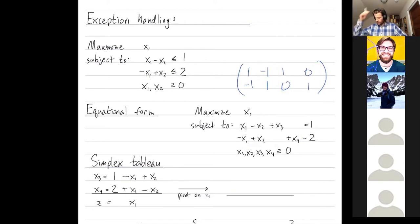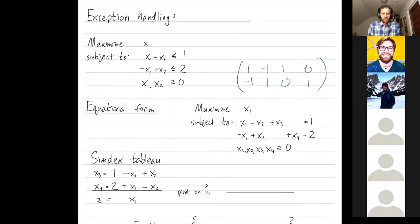So I'm choosing x3 and x4 to be my basic variables. And so that's why I write them down on the left-hand side in my simplex tableau. This first line is obtained by solving for x3. And the second line is obtained by solving for x4. And then z is our notation for the function we're trying to optimize, which is just x1. Okay. Hopefully you're all with me, but speak up if not.